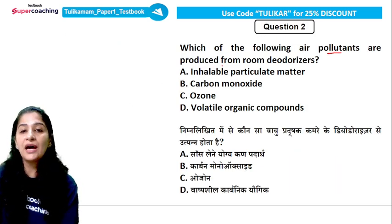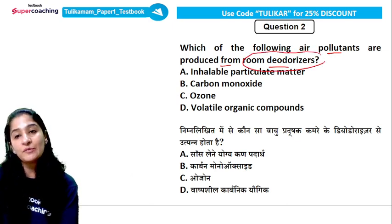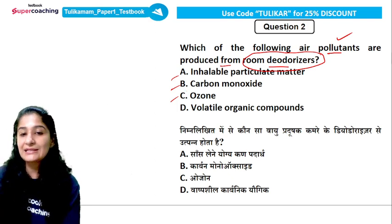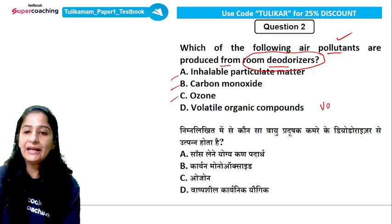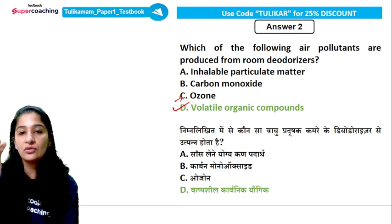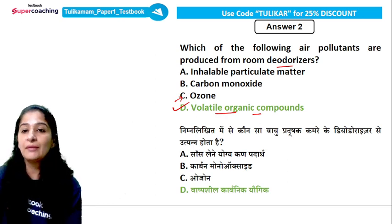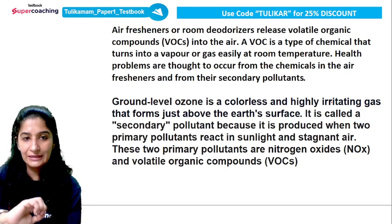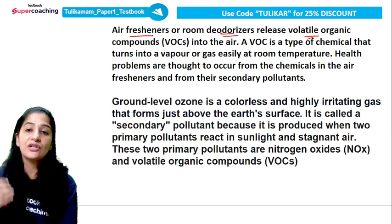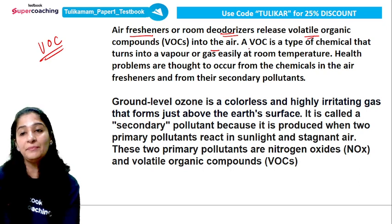Next question: 'Which of the following air pollutants are produced from room deodorizers?' Sometimes these types of questions come and we get confused. The concept here is about room deodorizers, which are also categorized as a type of air pollutant. The options are: inhaled particulate matter, carbon monoxide, ozone, and VOC — Volatile Organic Compounds, which is again a very important topic. The answer to this question is VOC. We sometimes confuse this with ozone, so remember: room deodorizers, perfumes, mist sprays, mosquito repellants — all such sprays release VOC.